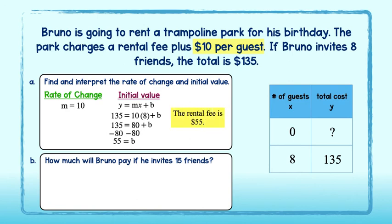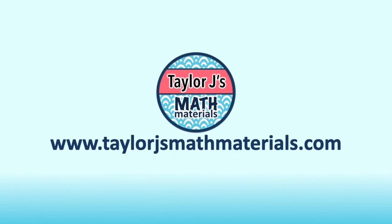Lastly, how much will Bruno pay if he invites 15 friends? Again, we will use the equation of a line. We can plug in the rate of change m and initial value b that we found above to start. Since the number of guests is represented by x, we will plug in 15 for x and solve for y. 10 times 15 equals 150, and 150 plus 55 equals 205. Bruno will spend $205 total if he invites 15 friends. We'll see you in the next video!